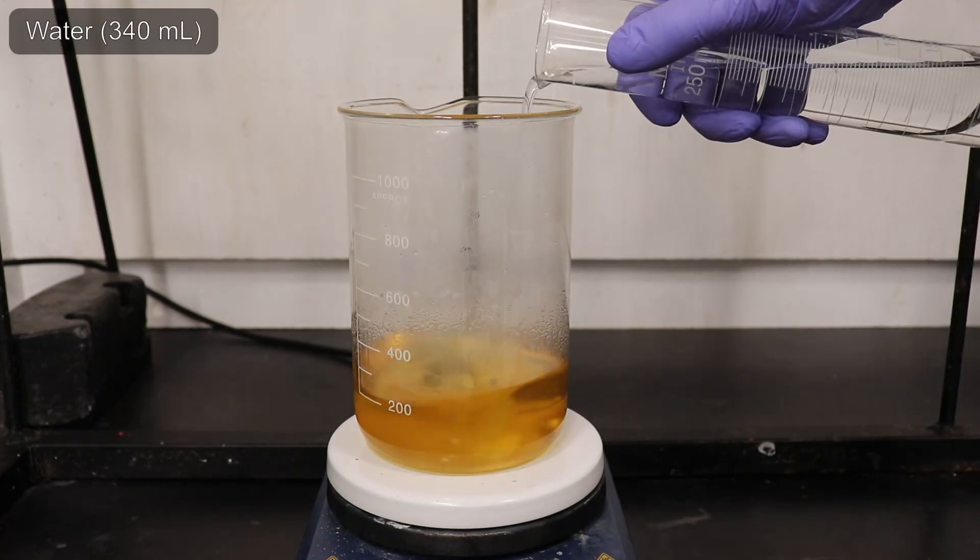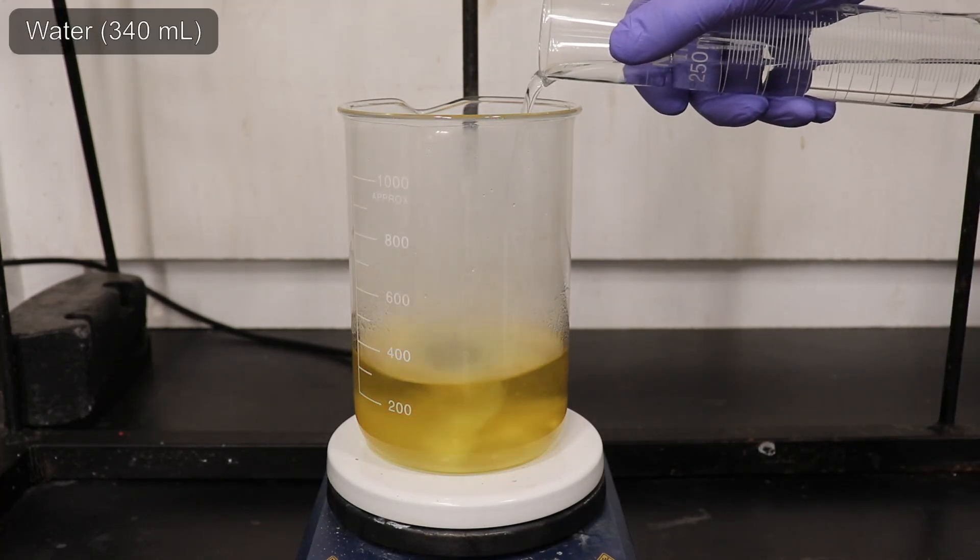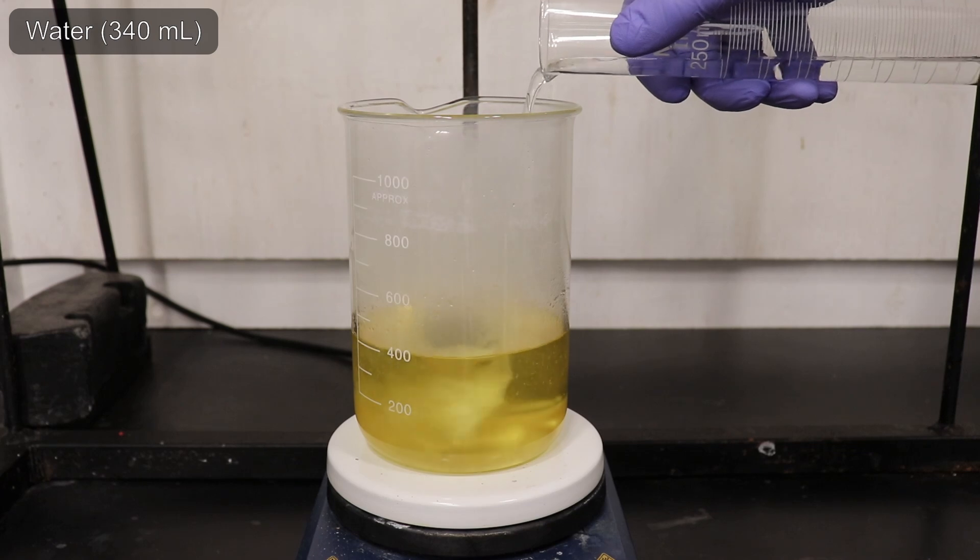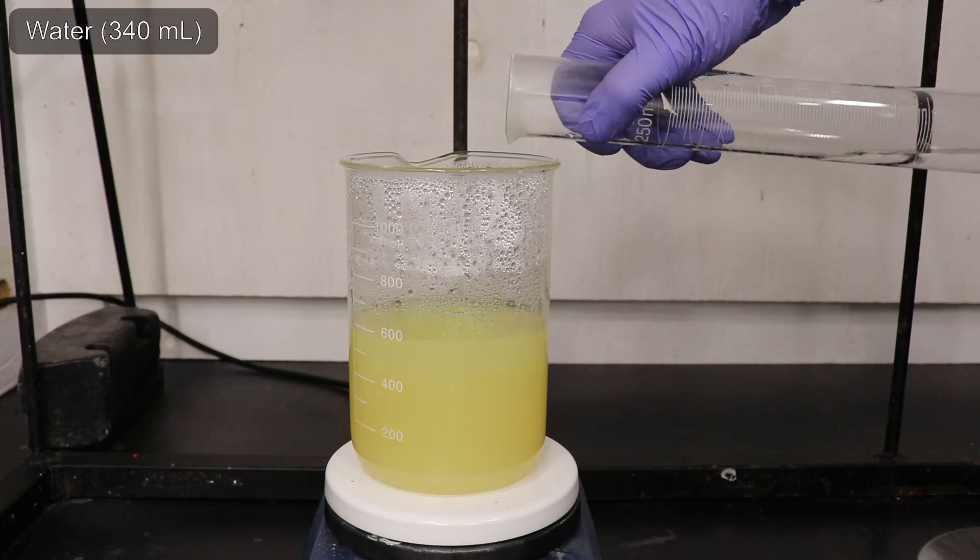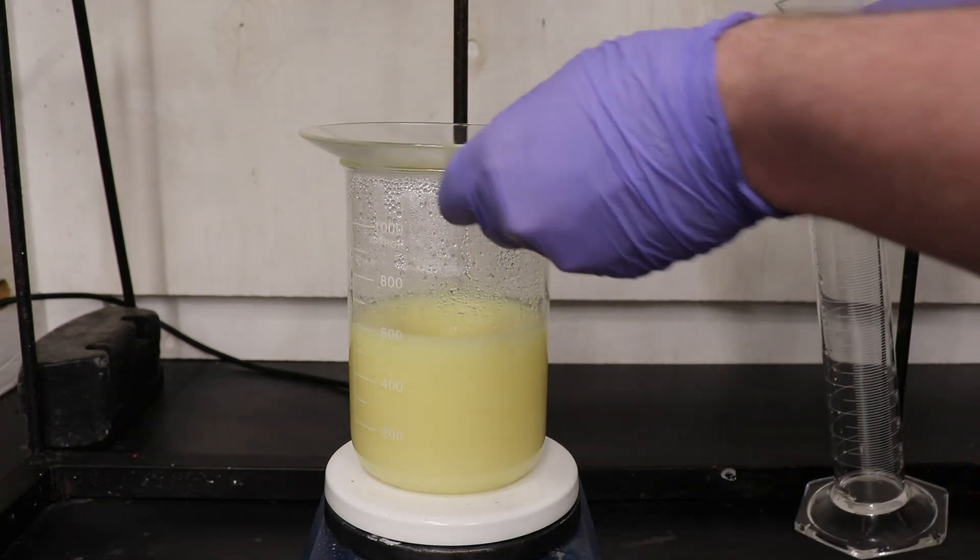I then added 340 mL of water, which I recommend doing in portions, waiting for the mixture to heat back to boiling between additions. This ensures you don't get a bunch of material crashing out at once, which might stop the stir bar.